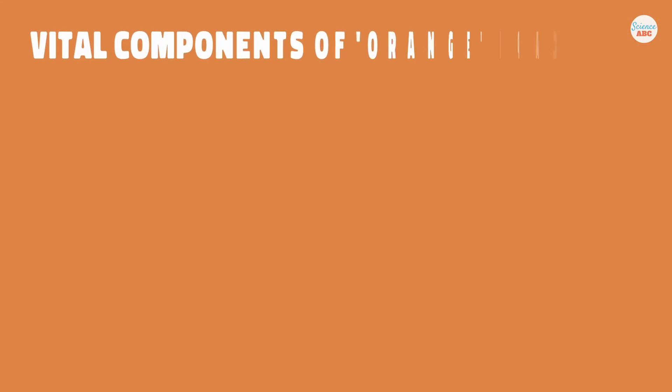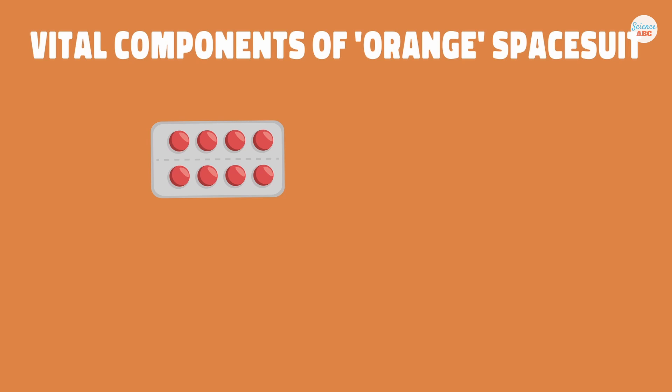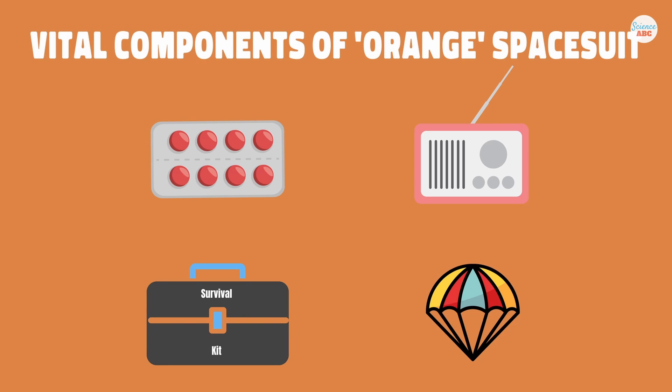The suit is designed to protect the wearer from accidents during the launch or landing of the spacecraft. It consists of certain vital components, including medicine, a radio, survival gear, and, of course, a parachute.